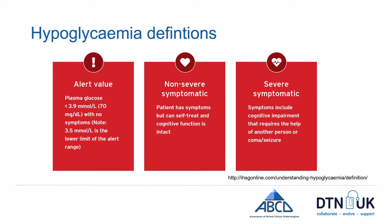To summarize the definitions: there are three key values to be aware of. The first is the alert value — if your sensor glucose is below 3.9 millimoles per litre you should treat and consider that you might be hypo or very close to one. Anything below 3 is called non-severe symptomatic hypoglycemia — readings where you can treat yourself and your cognitive function isn't impaired. Severe symptomatic hypoglycemia is where a low glucose causes cognitive impairment or confusion and you need someone else to help you out.